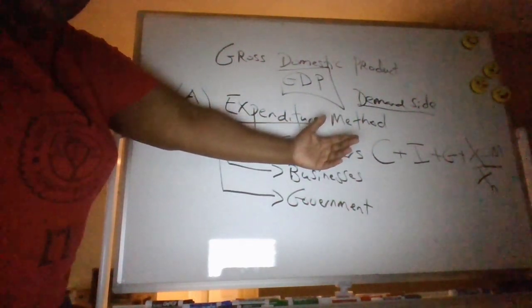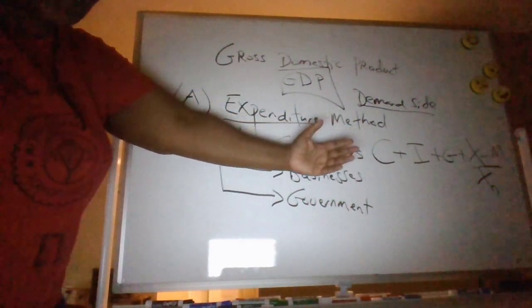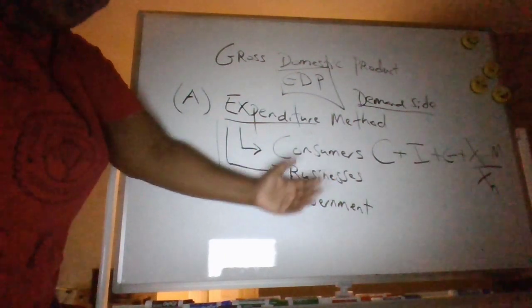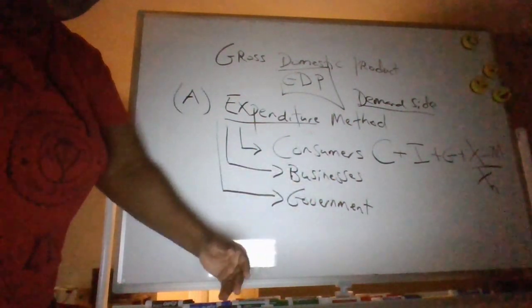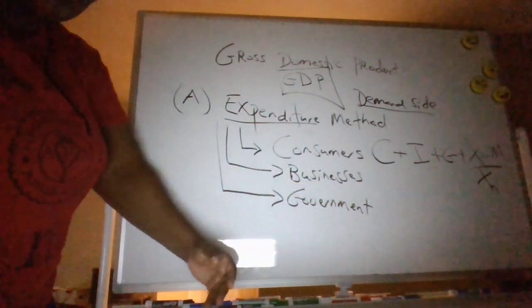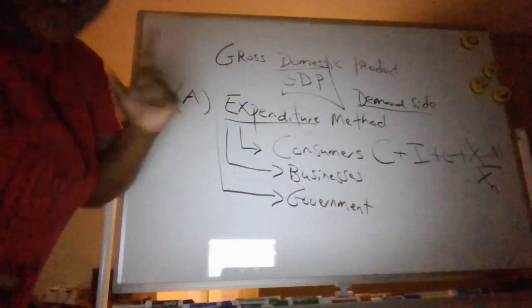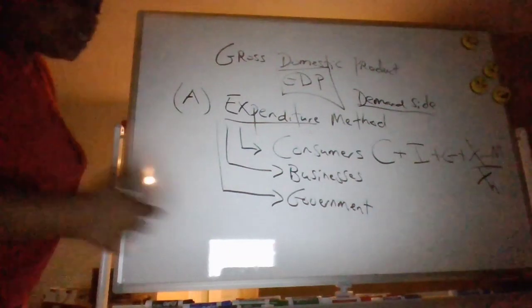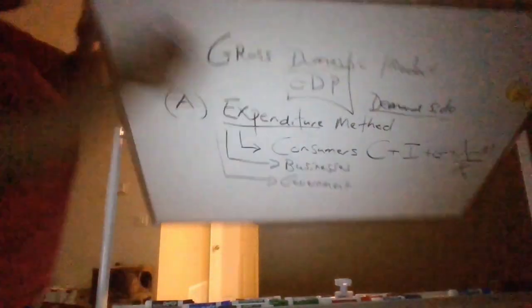This is a central equation in macroeconomics — it's so important. You need to be dreaming about this equation in this macro class. Get a henna tattoo of it right here: GDP equals C plus I plus G plus XN. I'm joking about the tattoo, of course — although that would be cool. That's one method. Let's do the other.